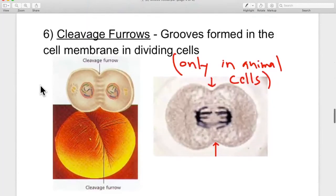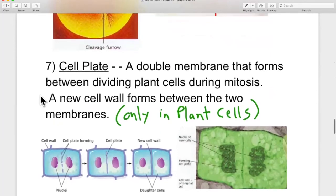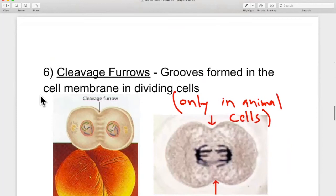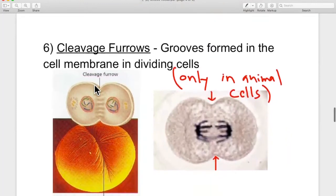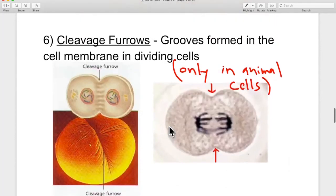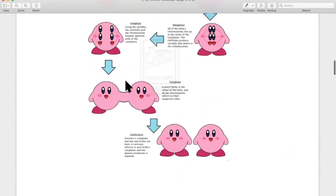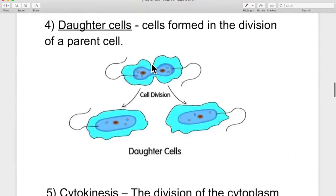Number six and number seven kind of go together. Number six is what happens when animal cells go through cytokinesis. Number seven is what happens when plant cells go through cytokinesis. Just like with Kirby, splitting down the middle. Or in this picture, splitting down the middle. Become two.